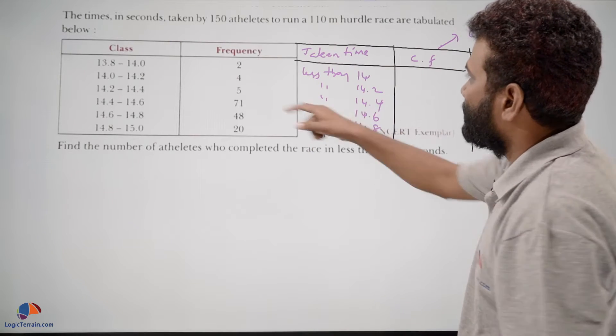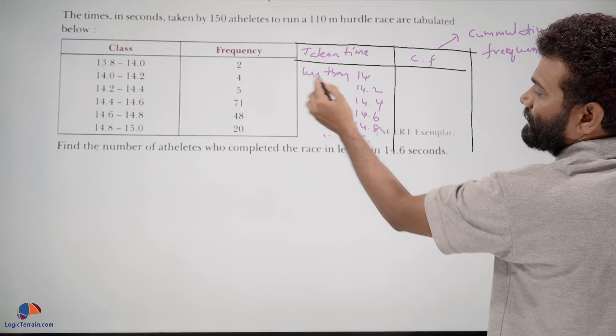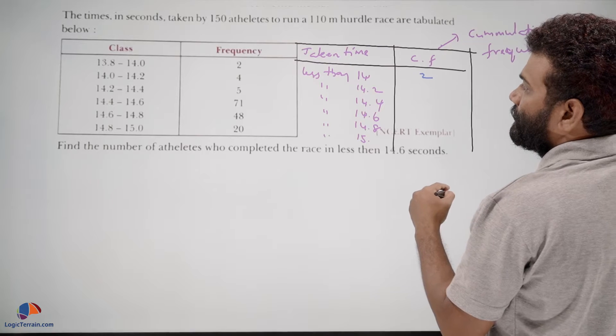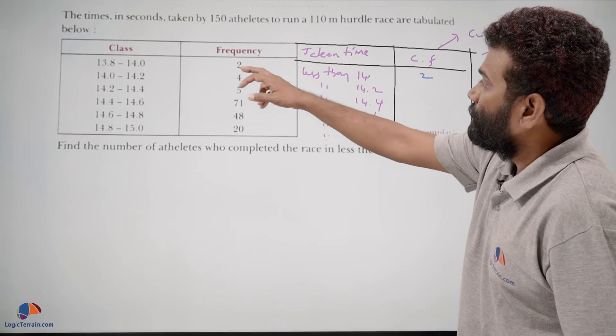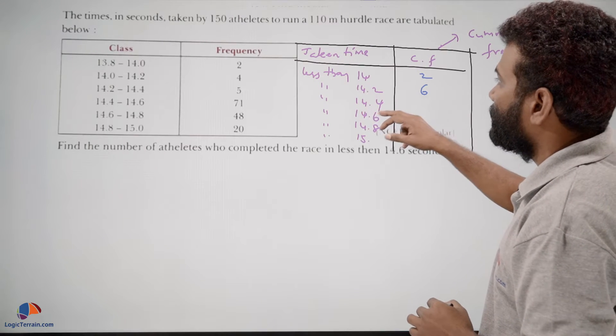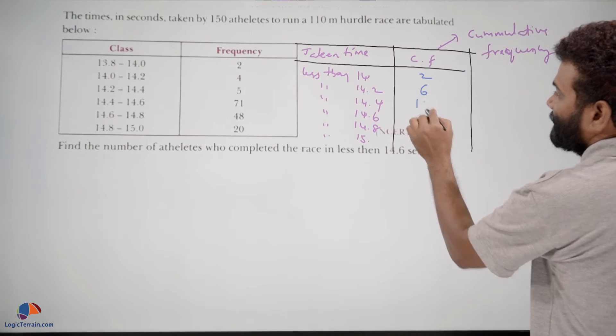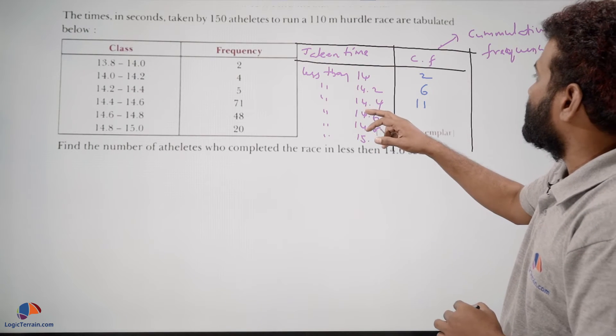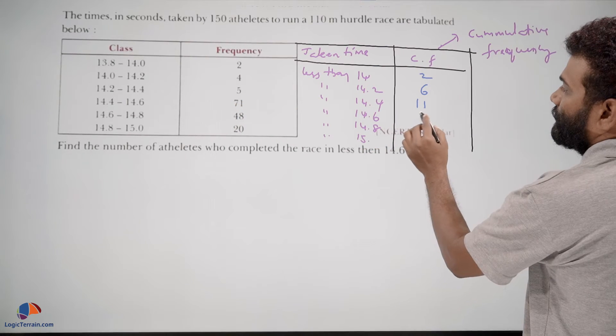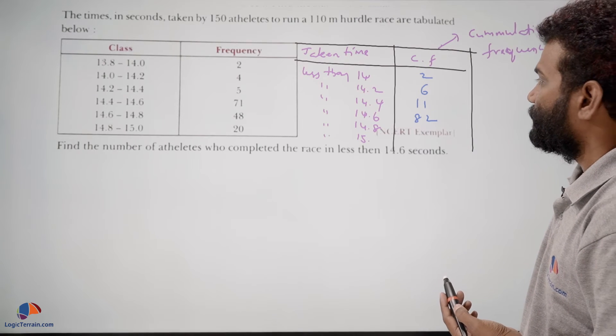The cumulative frequency here is less than 14 seconds, 2 athletes have completed. Less than 14.2, 2 plus 4, that is 6. Less than 14.4, that is 2 plus 6 plus 5, that is 11. Less than 14.6, 11 plus 71, that is 82.